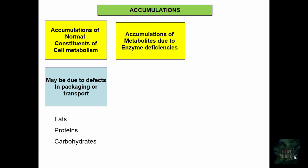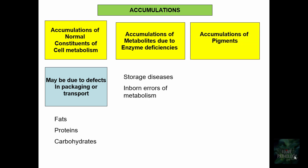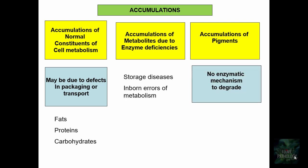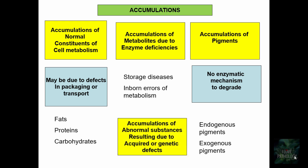The second scenario could be accumulations of metabolites due to some enzyme deficiencies — here we will discuss storage diseases and inborn errors of metabolism. The third one is accumulation of pigments. These pigments accumulate because there is no enzymatic mechanism to degrade them — they could be endogenous or exogenous pigments.